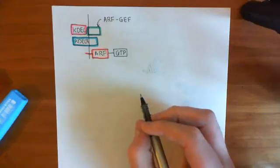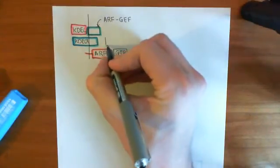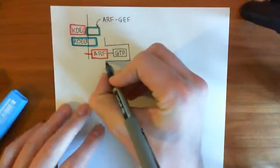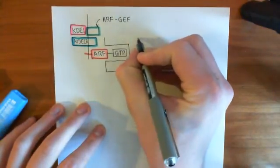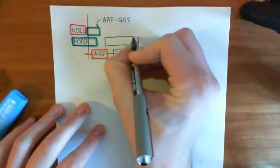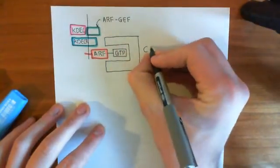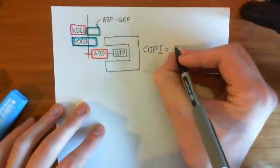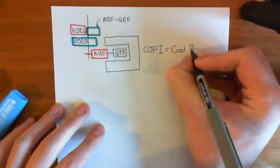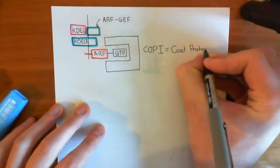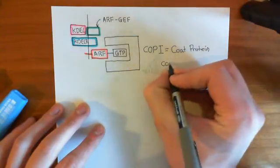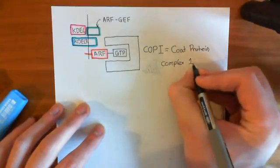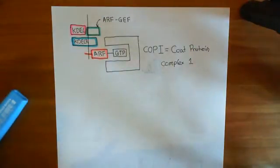Now what's going to happen is that COP1 protein complexes — which stand for COAT protein complex 1 of the first type — are going to come and bind here. This is COP1, COAT protein complex 1. It's often done in Roman numerals, so the 1 is denoted by a single I.